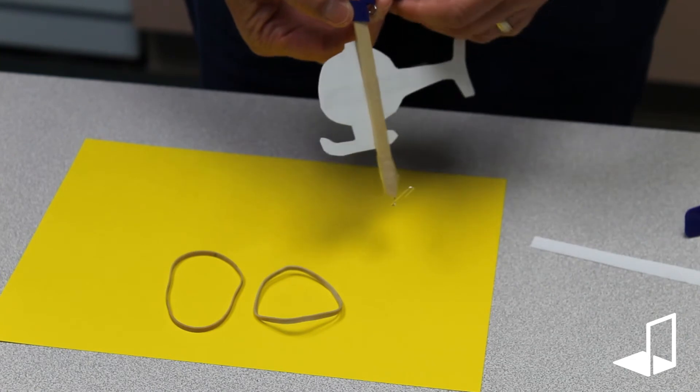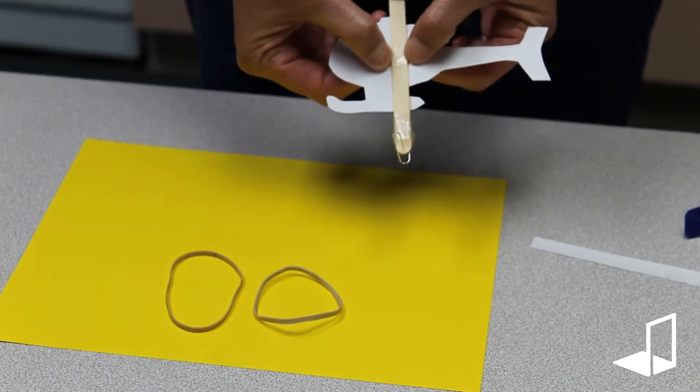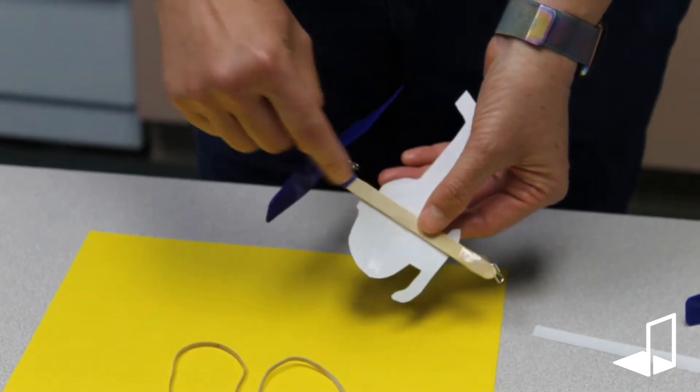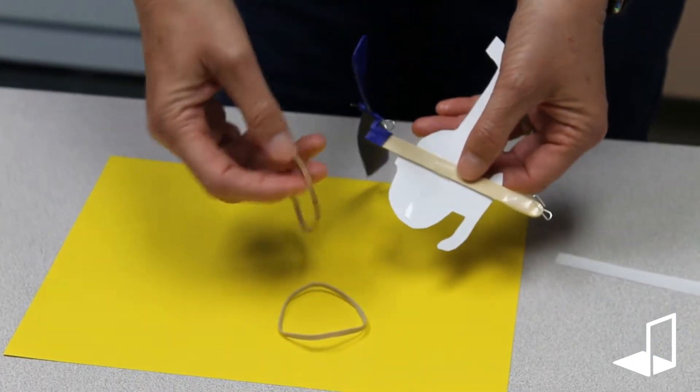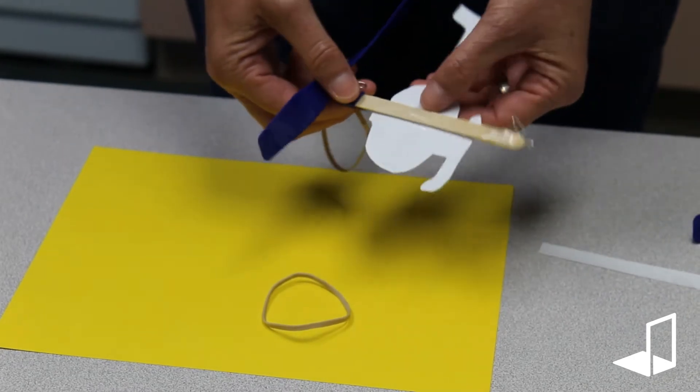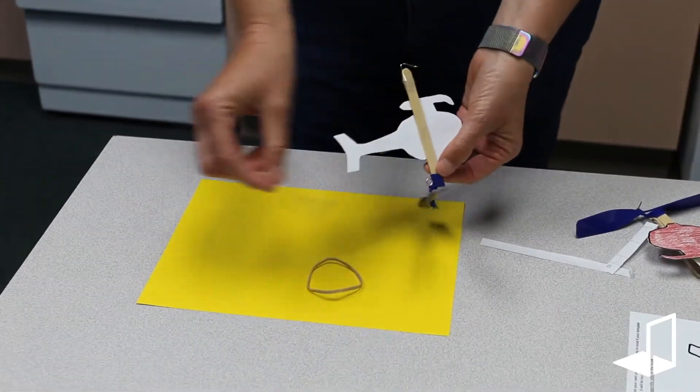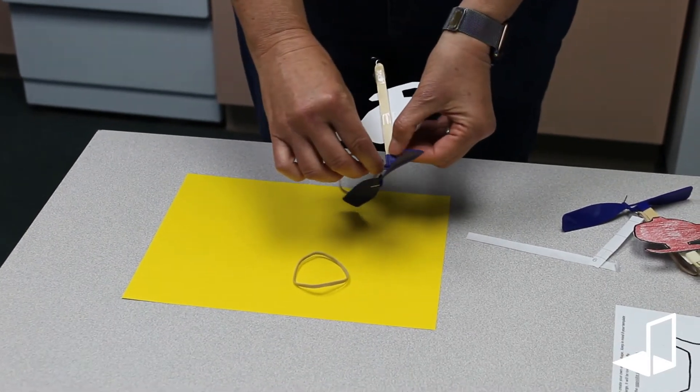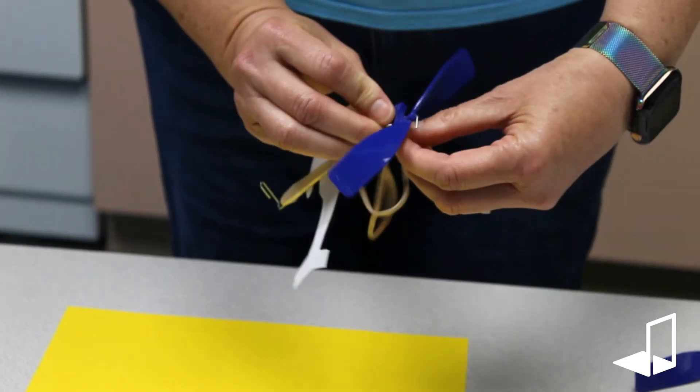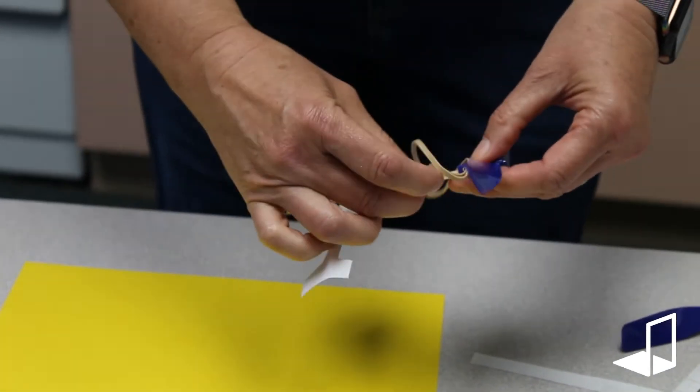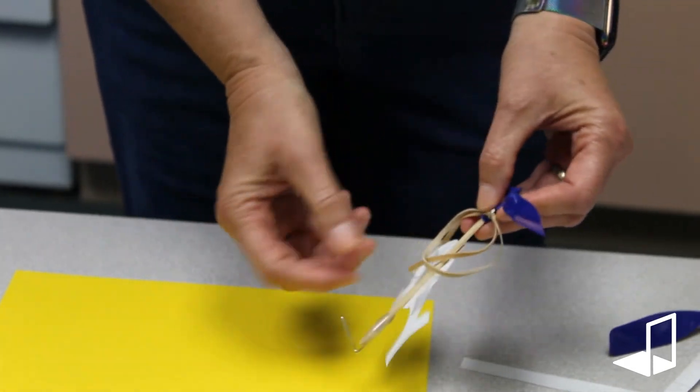Then you're going to attach rubber bands. We're going to give you a couple rubber bands—you can try one or two. I'm going to start with two. You're just going to hook it on this little loop on top, hook it onto our paper clip.